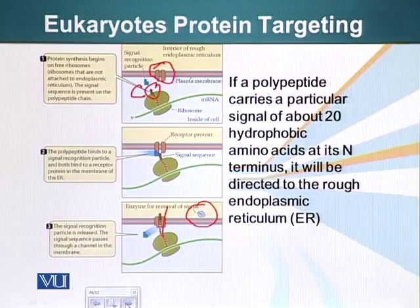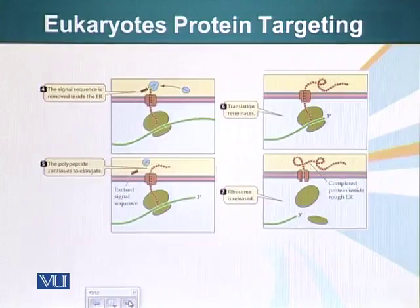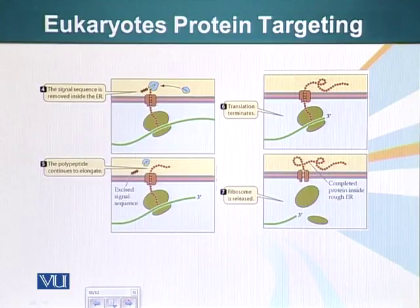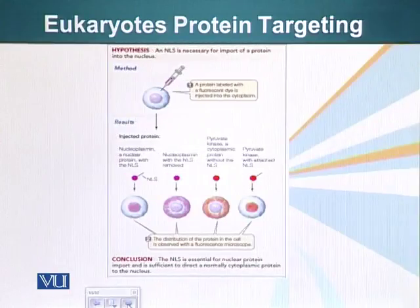In this case, the signal sequence is about 20 hydrophobic amino acids at the N-terminus of that protein. After the signal sequence has been cleaved, the protein is injected into the ER, and now the ER will have enzymes that will chemically modify this protein and send it onwards to the Golgi. And we know what happens from there on.